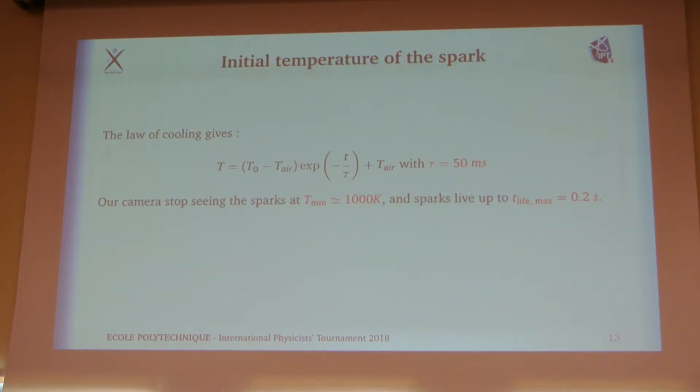But, this characteristic time is quite big. In fact, if we take a minimal temperature at which the sparks are visible by our camera to be 1,000 Kelvin, and if we observe sparks living up to 0.2 seconds, which we did, we can get back their initial temperature and it is about 10,000 Kelvin, which is quite high. This means that there might be another phenomenon which keeps the sparks glowing, which keeps the sparks hot. This phenomenon might be oxidation.